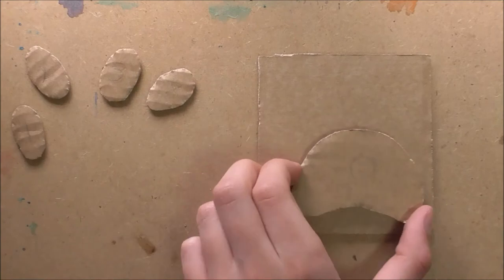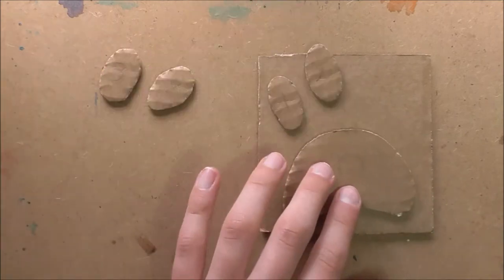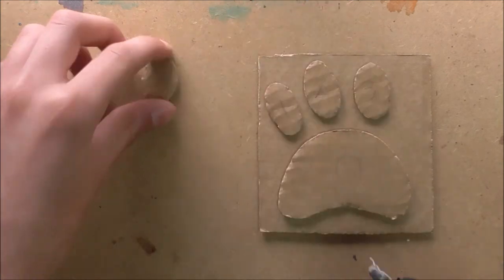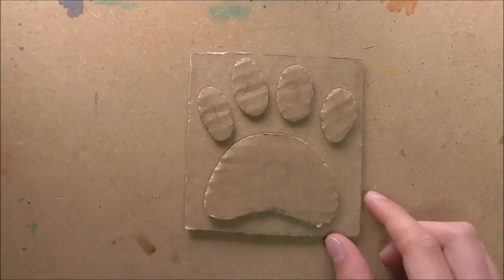So as you can see now, what you want to do is you want to get another square bit of cardboard which is bigger than your design, and you then just want to glue down all of the pieces onto this bit of cardboard. This is going to act as your stamp.